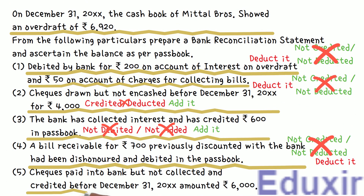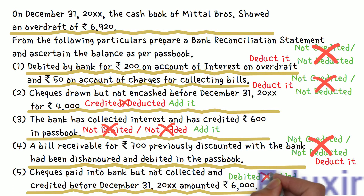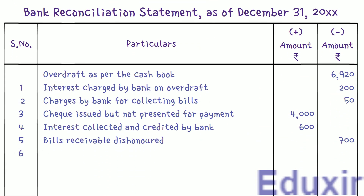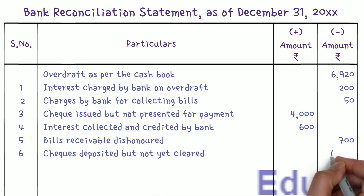Checks for 6,000 rupees are paid into the bank but not yet collected and credited by the bank. When the business receives checks, it immediately debits them in the cashbook and deposits them in the bank. However, due to timing difference, these checks are not yet collected by the bank when the statement is received. As per the cashbook the check is collected, but as per the passbook it is not. We need to deduct this amount from the cashbook balance. We write 'checks deposited but not yet cleared' and enter 6,000 rupees in the minus amount column.